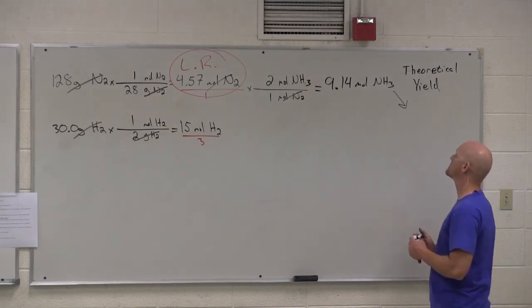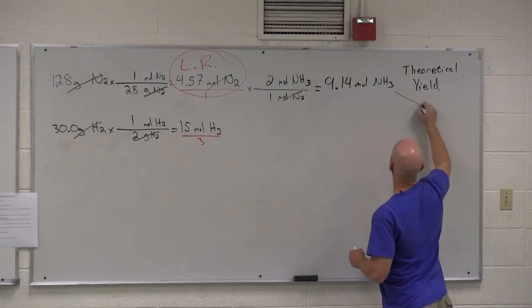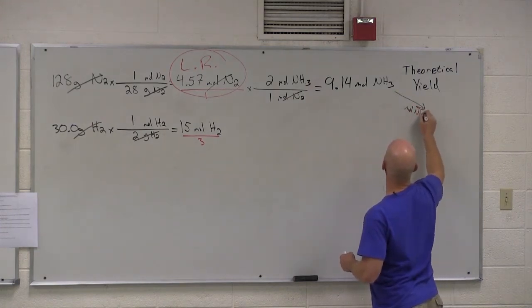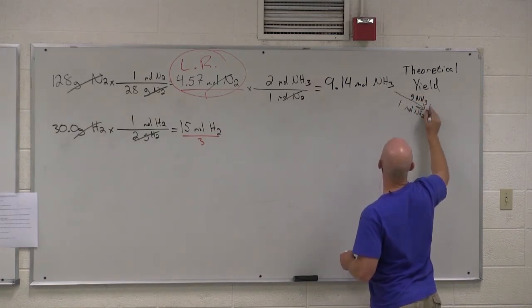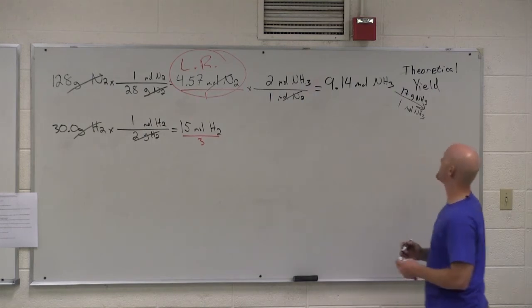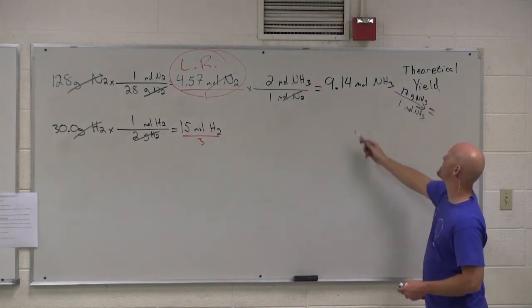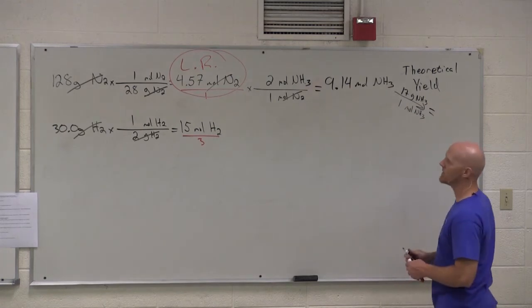How would I convert this to grams? Molar mass. I'll put moles of NH3 on the bottom. It's always one mole. And the grams of NH3 on top. And in this case, one mole of NH3 weighs 17 grams. And what do we get here for the mass of 9.14 moles of NH3?